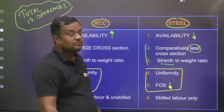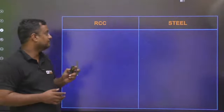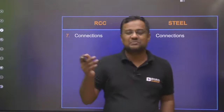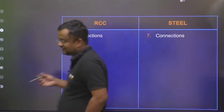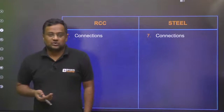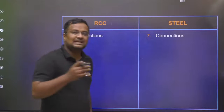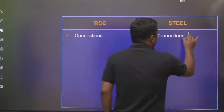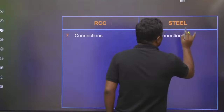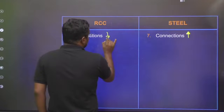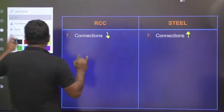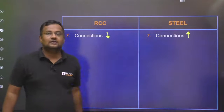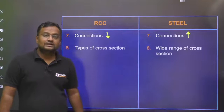In RCC you will never find welded, bolted, or riveted connections. But in steel, one beam is attached to another beam using angles, and there are lots of connections — either welding, riveting, or bolting. In RCC, members are cast monolithically, so there are no direct connections like welding, riveting, or bolting.